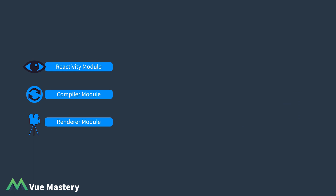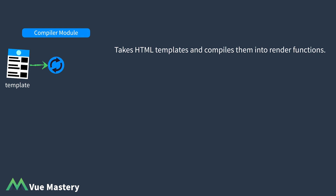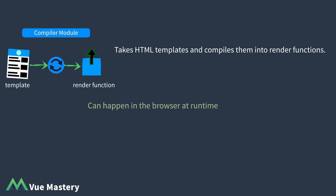Next is the compiler module. This knows how to take HTML templates and compile them into render functions. This can happen in the browser at runtime, but more often happens when a Vue project is built, so that a browser only ever receives render functions.